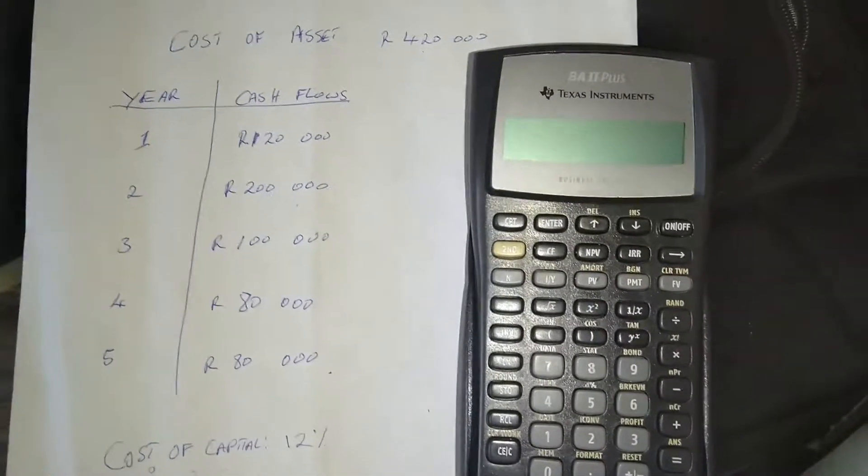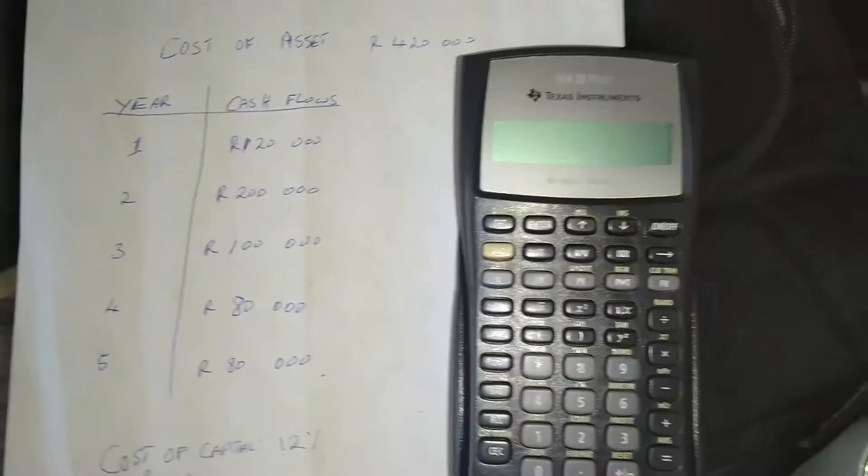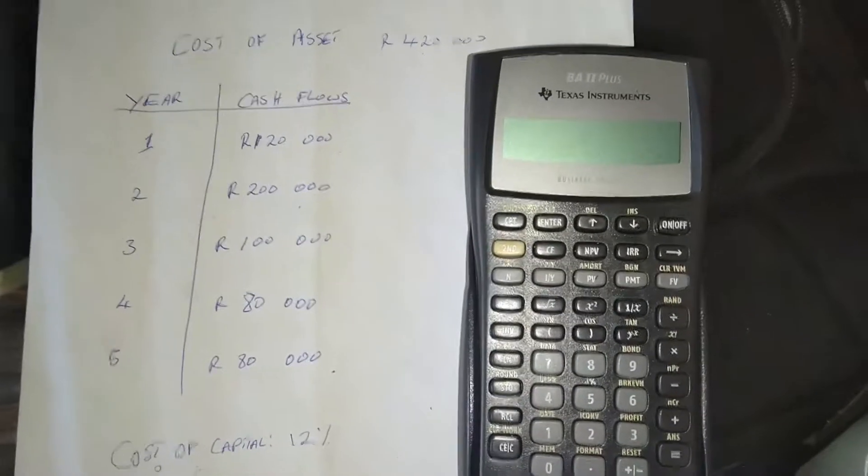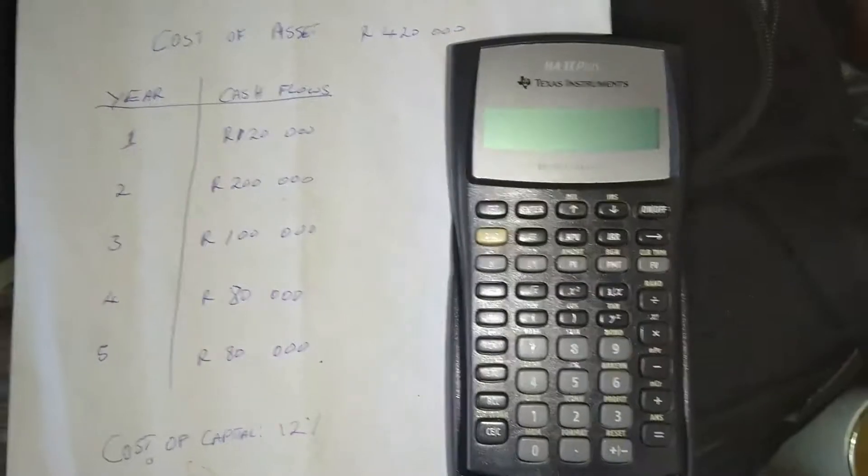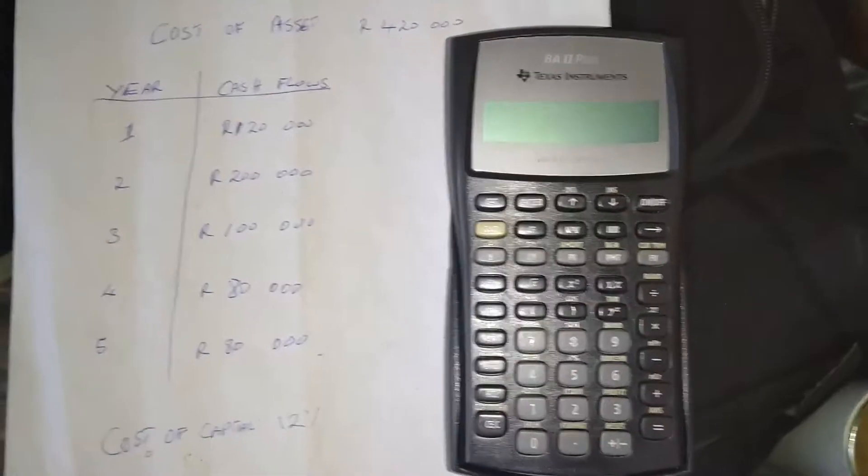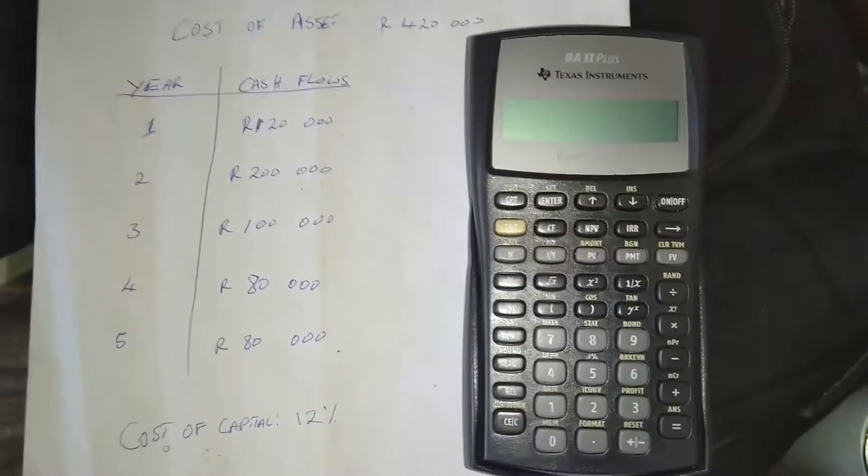Welcome to Countards. In this lesson, I'll be showing how to calculate the net present value or the NPV and the internal rate of return or the IRR using the financial calculator. This is the BA2 plus or the Texas instrument.